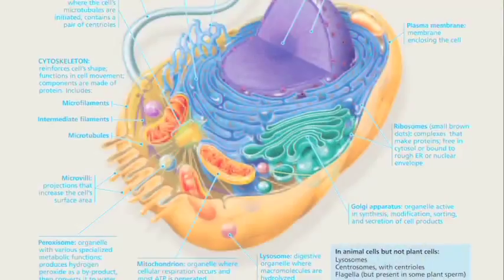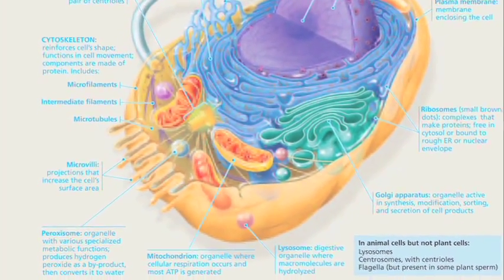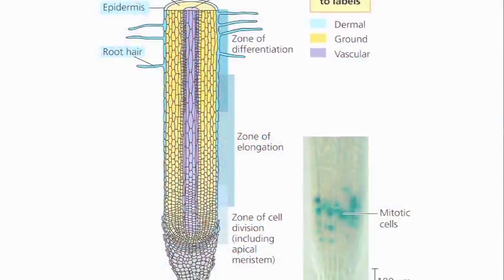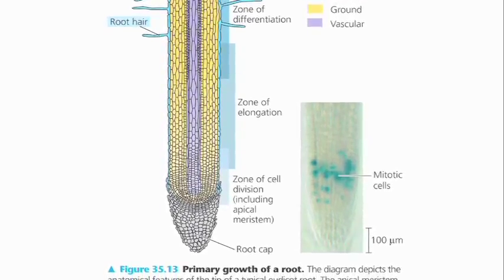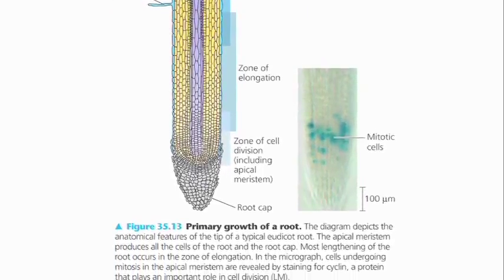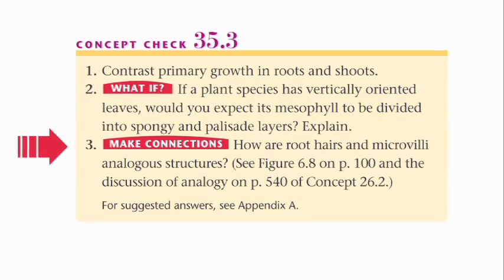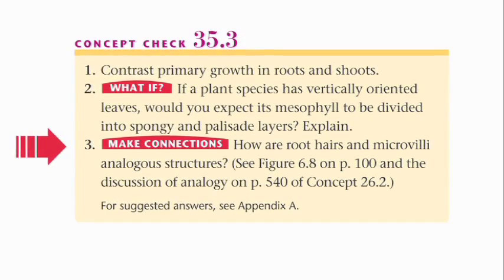For example, they can read about microvilli in the chapter about cells, and they can read about root hairs in the section about plants. But what do these two things have in common besides the fact that they're hairy? Well, they both have large surface areas, which enable them to absorb things better. And so by comparing different parts of the book, the student arrives at a more fundamental truth.